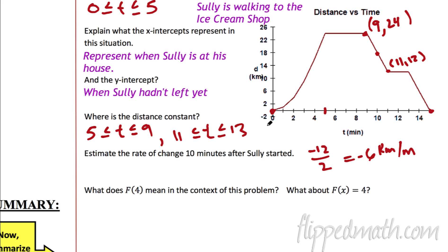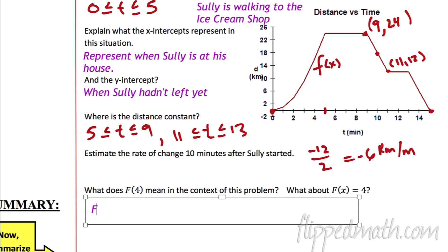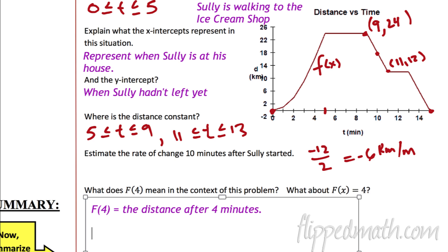What does f of 4 mean in the context of this problem? f of 4 means the value when t equals 4 — it's the function value at the 4th minute. So it's his distance after 4 minutes. f of 4 equals the distance after 4 minutes — that's in context.